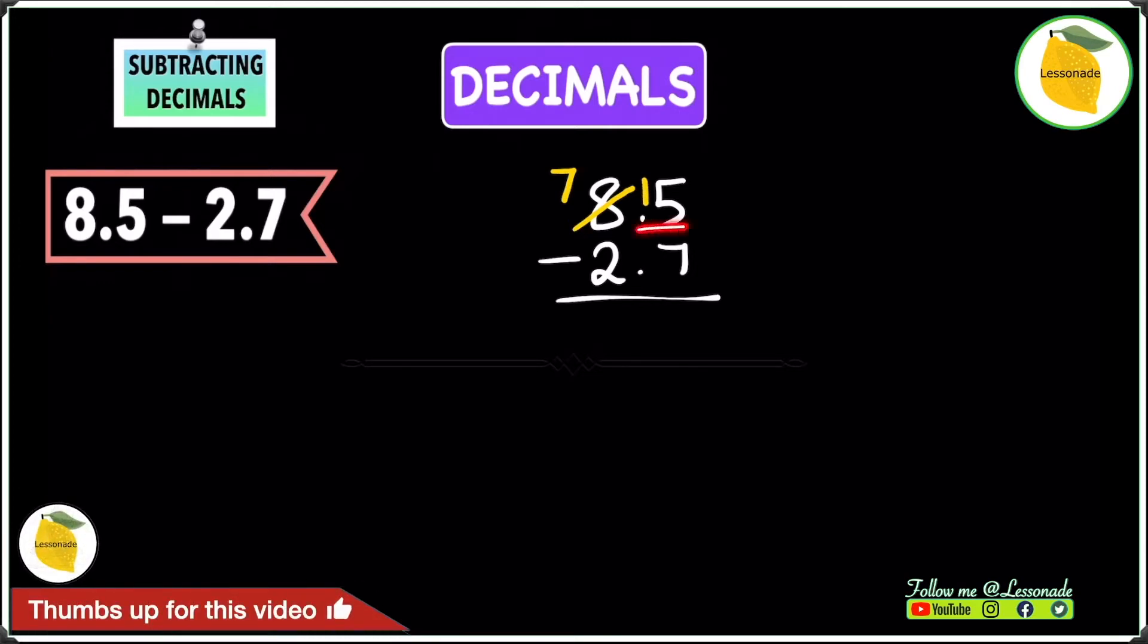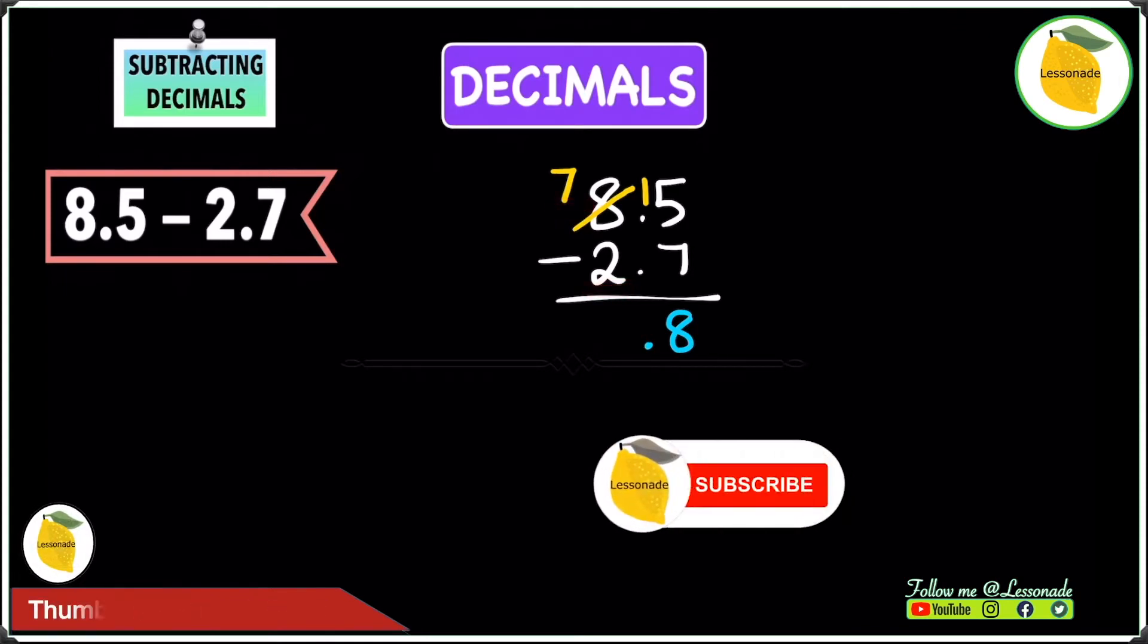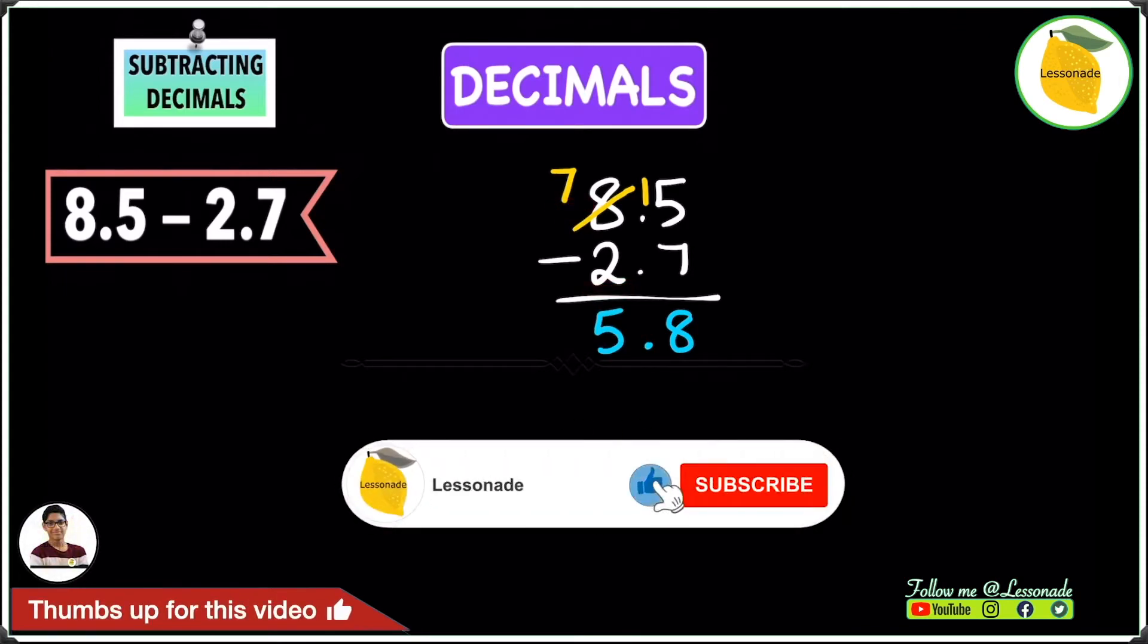Now we're going to do 15 minus 7, and 15 minus 7 is 8. Then 7 minus 2 will be 5. So this means our answer to this question is 5.8.